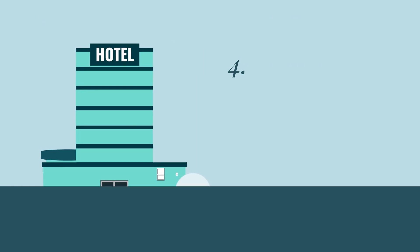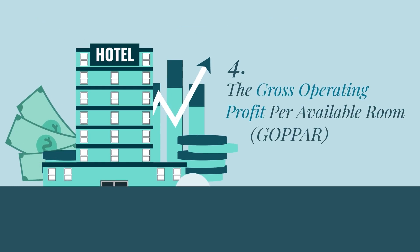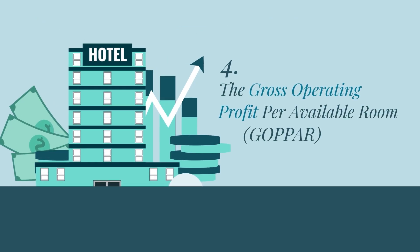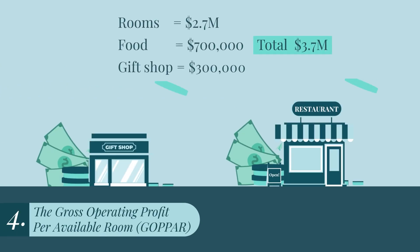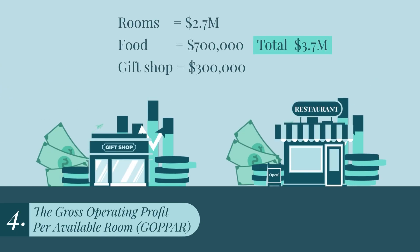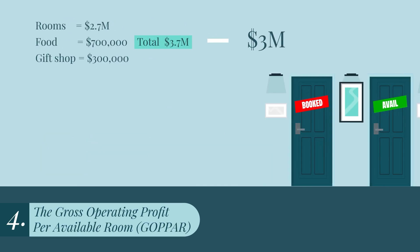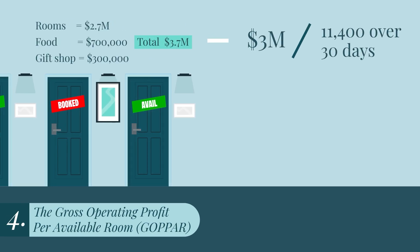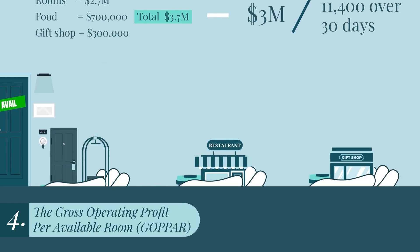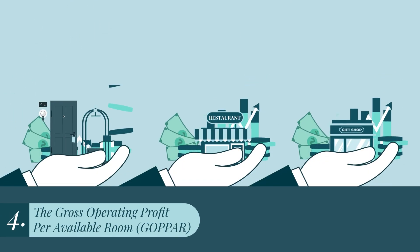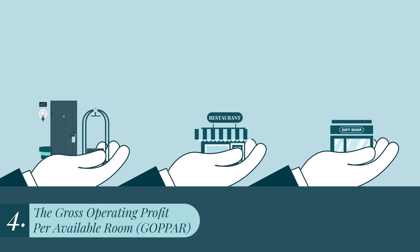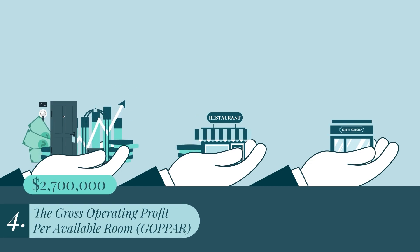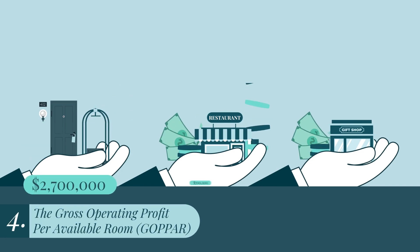Number four, the gross operating profit per available room. The GOPAR calculates the revenue from all hotel departments and amenities, subtracts operating expenses, and divides that by the total number of rentable rooms. Unlike the previous KPIs, GOPAR takes into account all of the property's revenues, including room revenues and ancillary services, like on-site restaurants or stores.